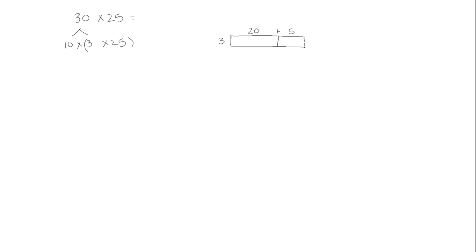We'll find the product by calculating the area of each of the rectangles. 3 times 20 would be 60 for the first rectangle, and then for the second rectangle 3 times 5 is 15. So 60 plus 15 is 75, and then we multiply by 10, so 75 times 10 would be 750. Our product is 750.